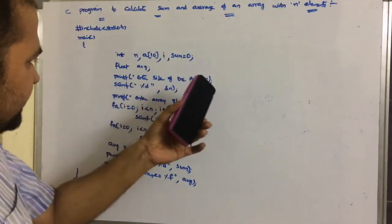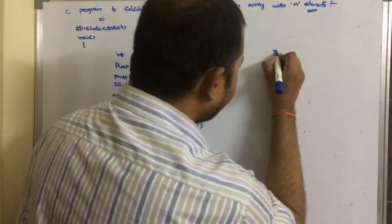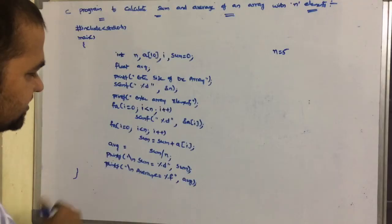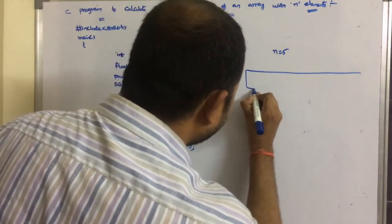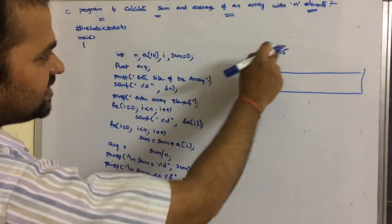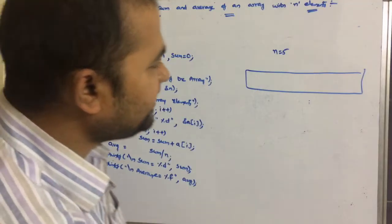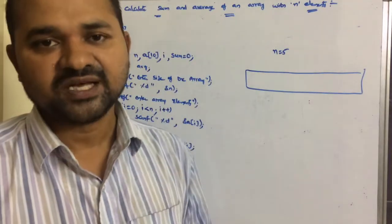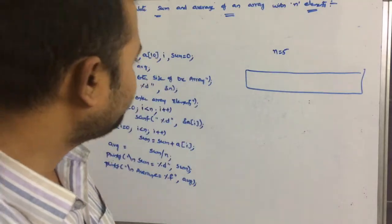Let's trace the execution. printf asks for the size of the array, scanf reads n — let n = 5. printf then asks for array elements, and the for loop runs from i=0 while i < n. Since the size of an integer is 2 bytes and there are 5 elements, 2 × 5 = 10 bytes of memory will be allocated for the array.